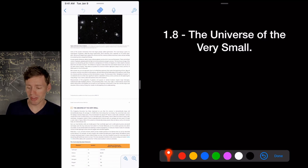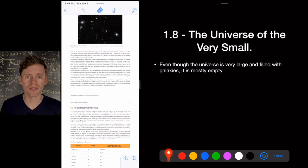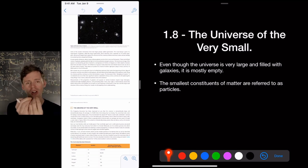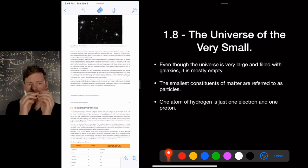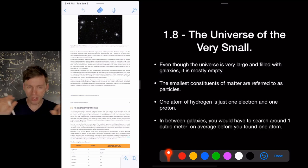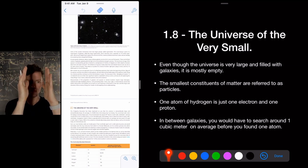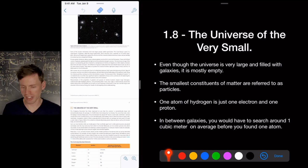So, let's go to the opposite extreme. Let's talk about the universe of the very small. Even though the universe is very large and filled with galaxies, it is mostly empty, okay? There's not a lot going on here. The smallest constituents of matter, if we imagine what they are. We call them particles. An atom of hydrogen is made of two particles, a proton and an electron. In between the galaxies, you would have to search. Imagine a meter stick. How do I show you what a meter is on my little window here? Okay, a meter, right? You're probably two meters tall or maybe one and a half meters tall. A meter stick, 36 inches, right? If you imagine one meter by one meter by one meter, an Amazon box that came with a mini fridge, you would have to look around in there. That whole box would only contain one atom in outer space. So one hydrogen atom, one electron, one proton. That's how empty it is. There's almost nothing out there.